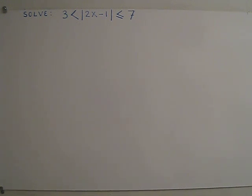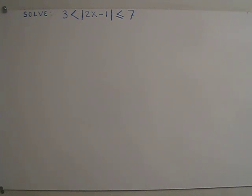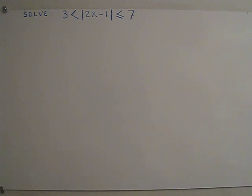I am going to give an example on absolute value double inequality. Solve: the absolute value of 2x minus 1 is greater than 3 and less than or equal to 7. How do we solve this double inequality problem?